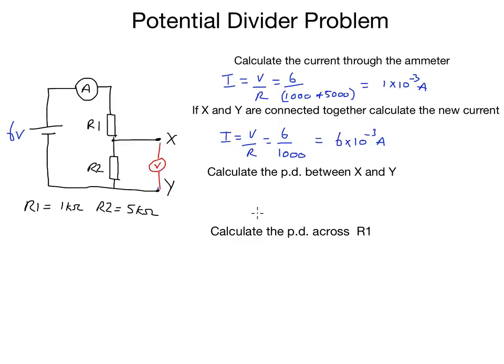We want to know what the reading on that voltmeter is. The easiest way to do this is to use the potential divider equation.